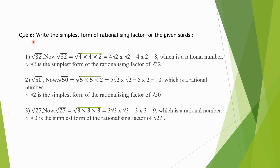Question number 6: write the simplest form of rationalizing factor for the given surds. First question: √32. Square root of 32 can be written as √(4×4×2). Square root of 4 into 4 can be taken out. We get 4 multiplied to √2. So to multiply √2, we get 4 multiplied to 2, that is 8, which is a rational number. Therefore √2 is the simplest form of rationalizing factor of √32.